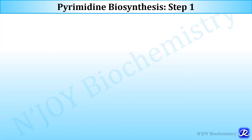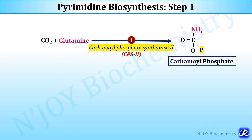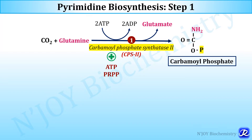In step 1 of pyrimidine biosynthesis, glutamine transfers its amido group to carbon dioxide by the action of enzyme carbamoyl phosphate synthase 2 (CPS2) to form carbamoyl phosphate. This is an ATP-dependent reaction — two ATPs are utilized — and glutamine is released as glutamate. CPS2 is a cytosolic enzyme activated by ATP and phosphoribosyl pyrophosphate (PRPP), and inhibited by UTP.